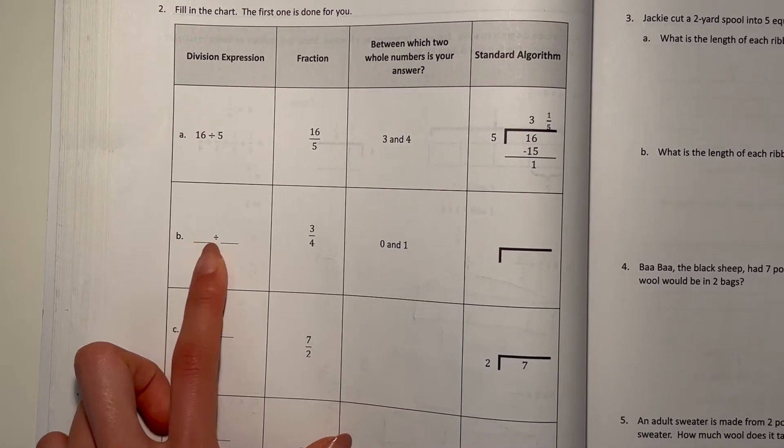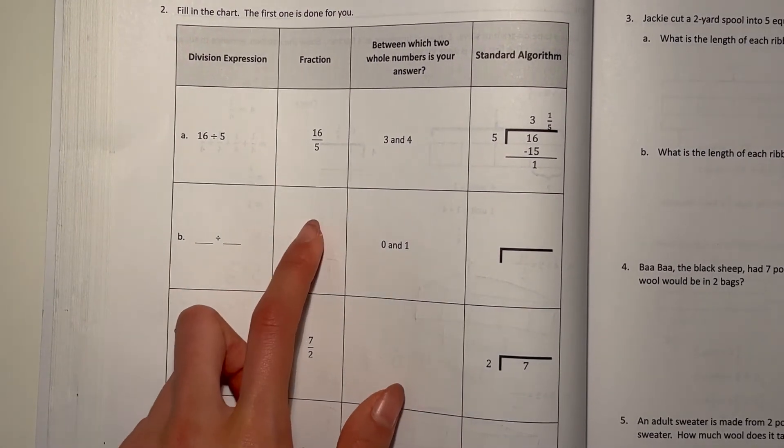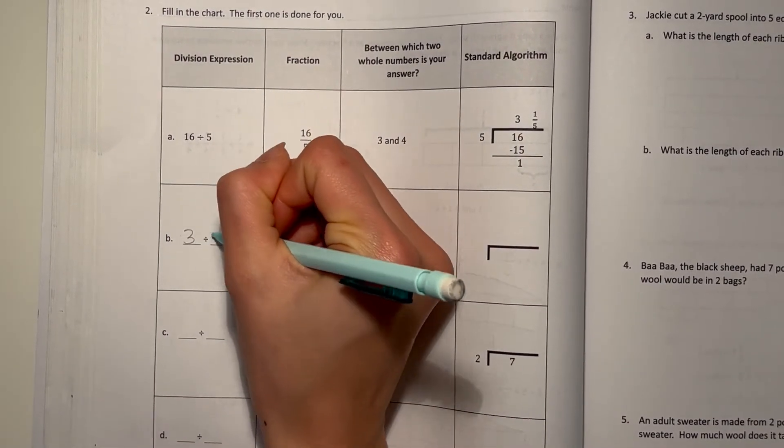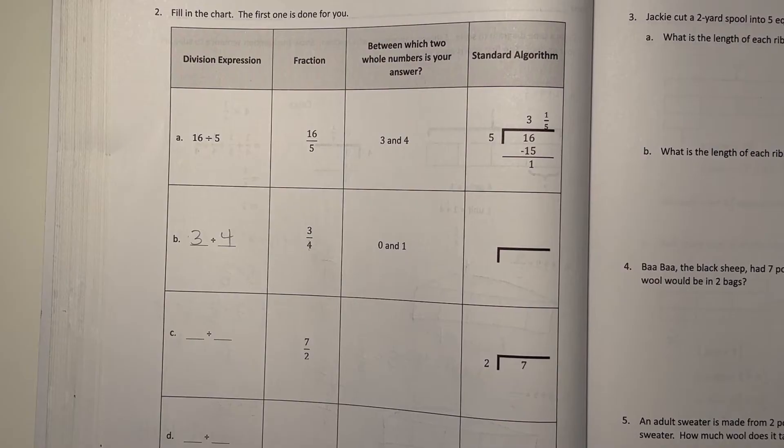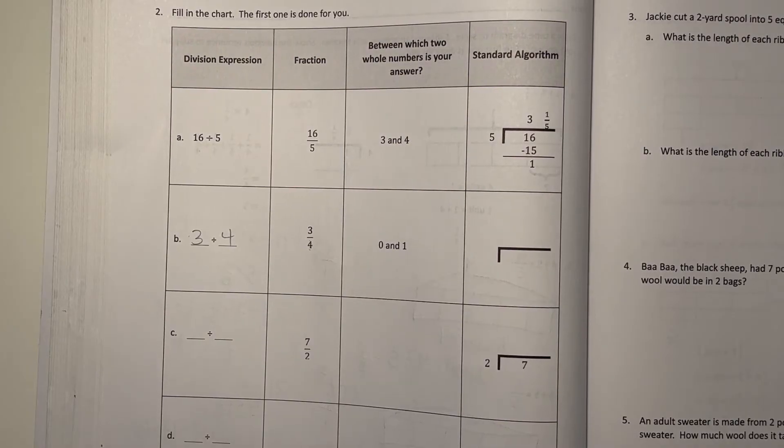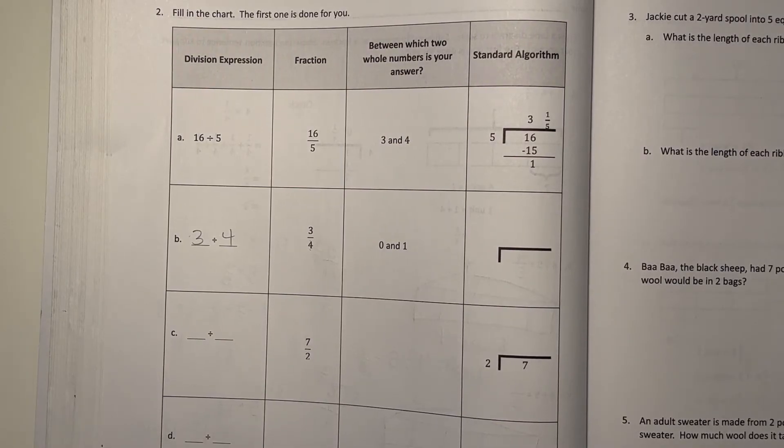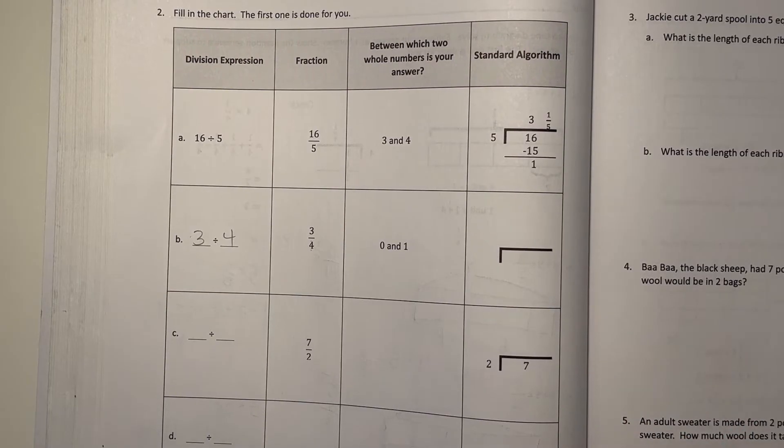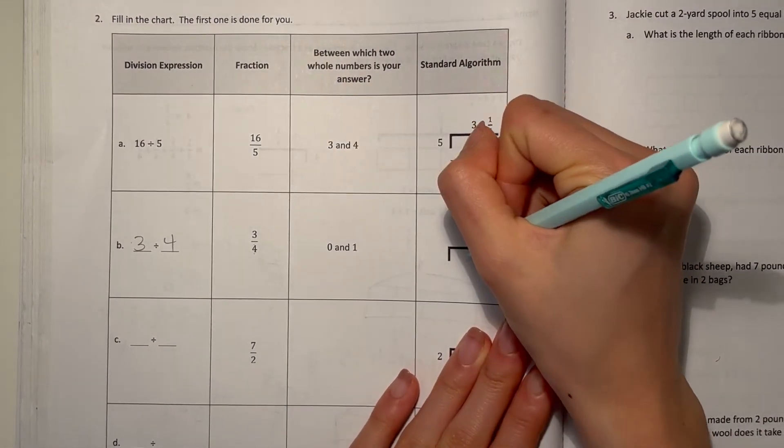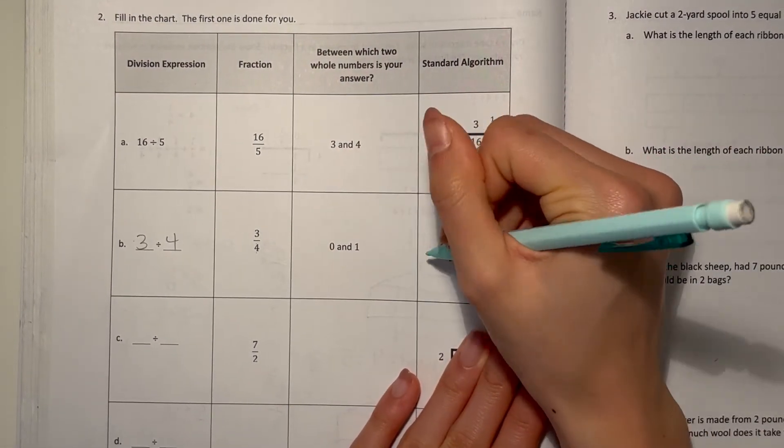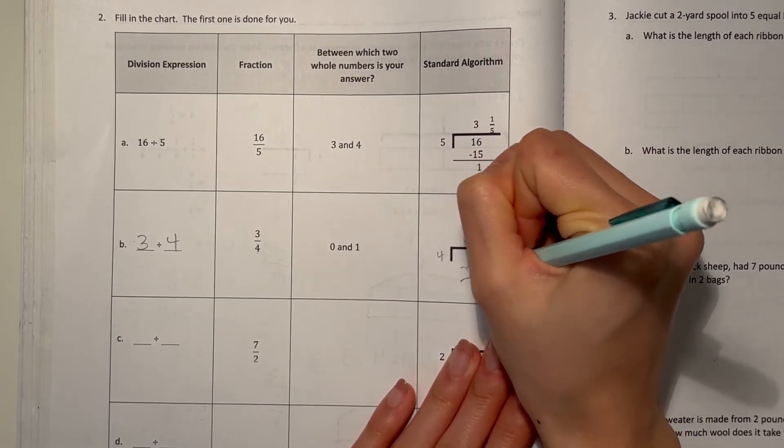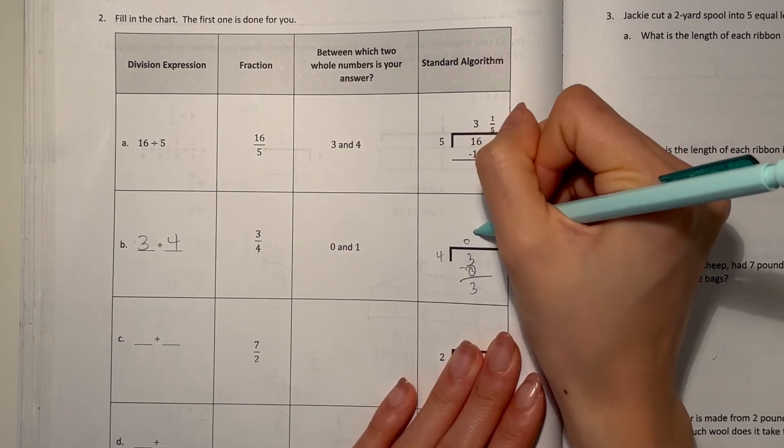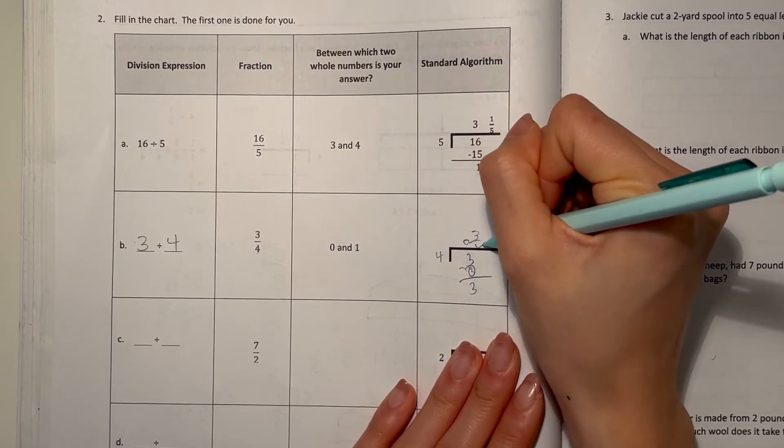B, we're given the fraction 3 fourths, so our division problem would be 3 divided by 4. And 3 fourths is not even 1, so it's between 0 and 1. And our long division, we do 3 divided by 4, 4 goes 0 times into 3, minus 0, you get 3 left over, so it's 3 fourths.